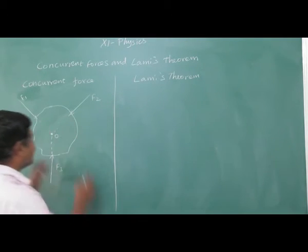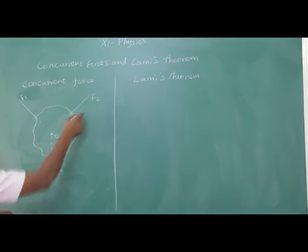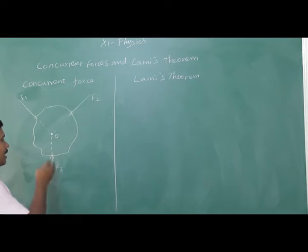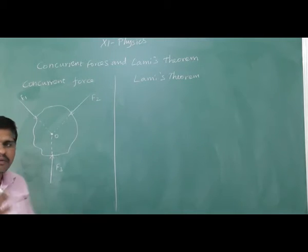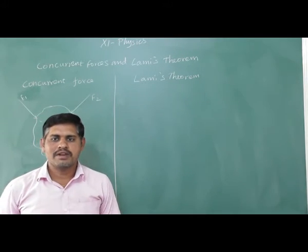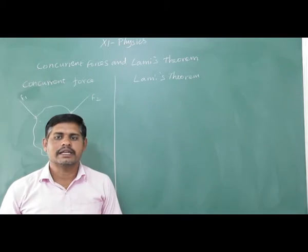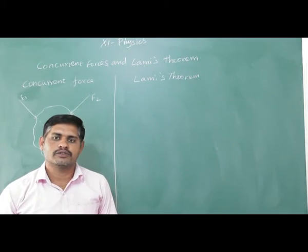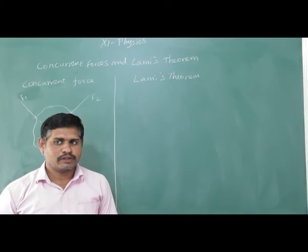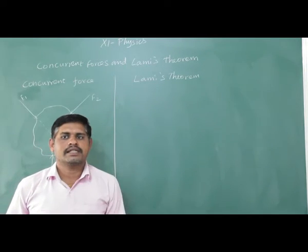For a collection of forces F1, F2, F3, if the lines of action meet at a common point — that means point O — then it is called concurrent forces. The concurrent forces need not be in the same plane.